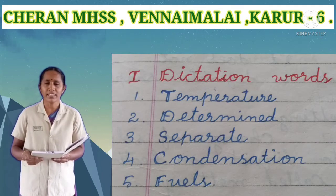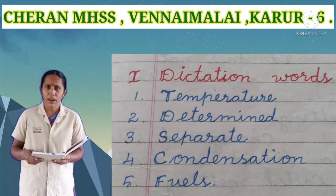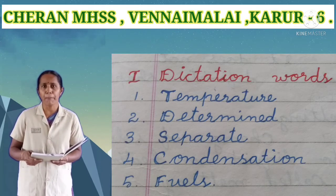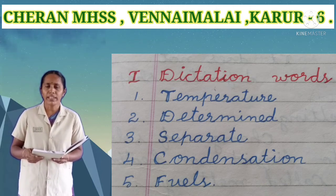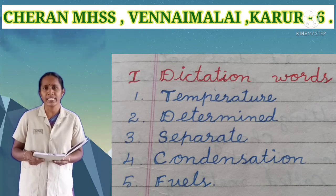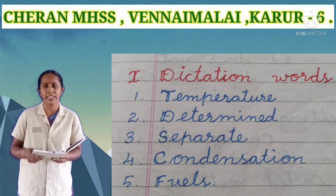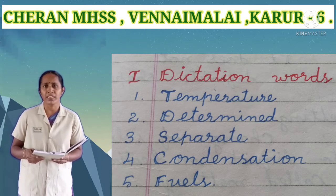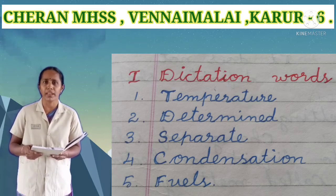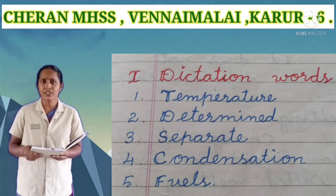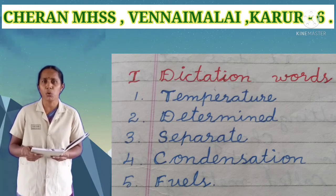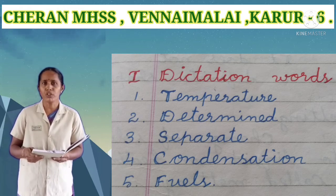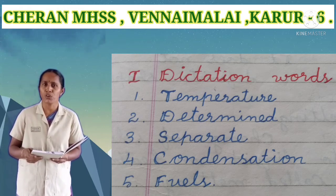See the second lesson dictation words, students. First one: temperature. T-E-M-P-E-R-A-T-U-R-E, temperature. Second one: determined. D-E-T-E-R-M-I-N-E-D, determined. Third one: separate. S-E-P-A-R-A-T-E, separate. Fourth one: condensation. C-O-N-D-E-N-S-A-T-I-O-N, condensation. Fifth one: fuels. F-U-E-L-S, fuels.